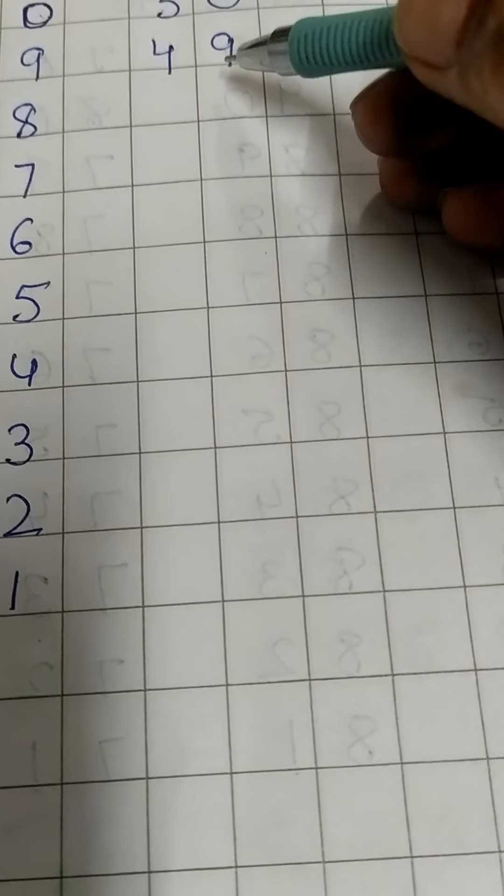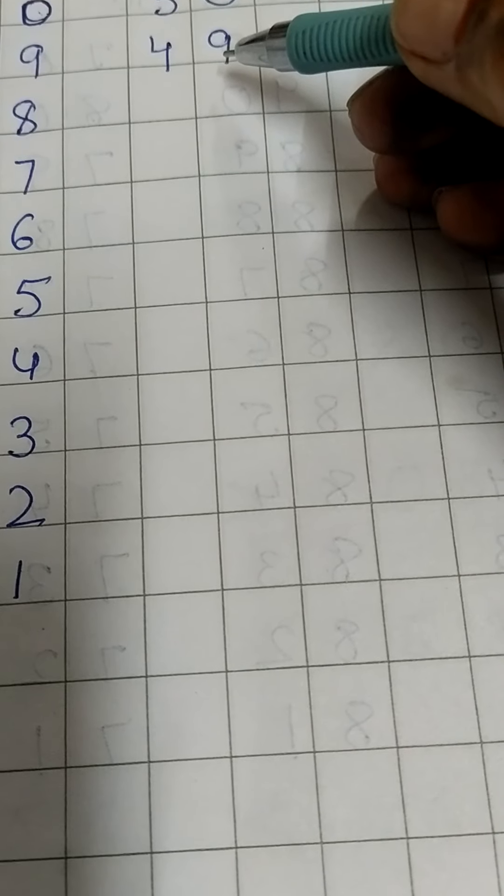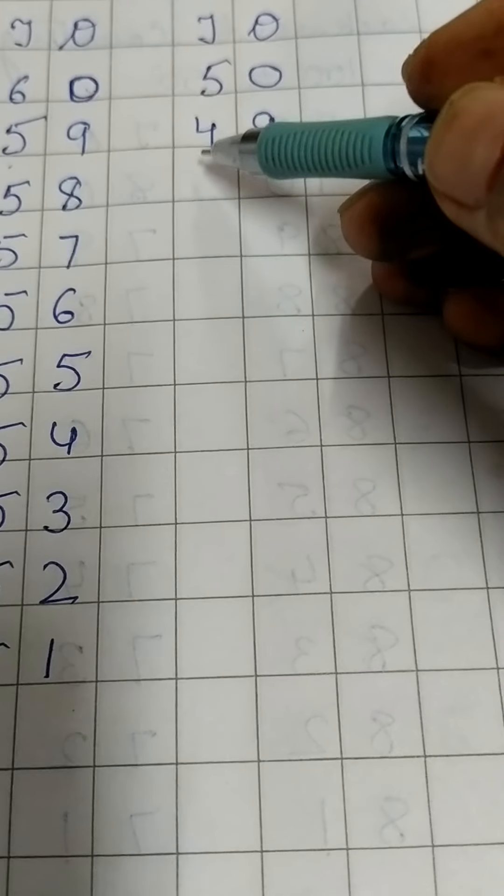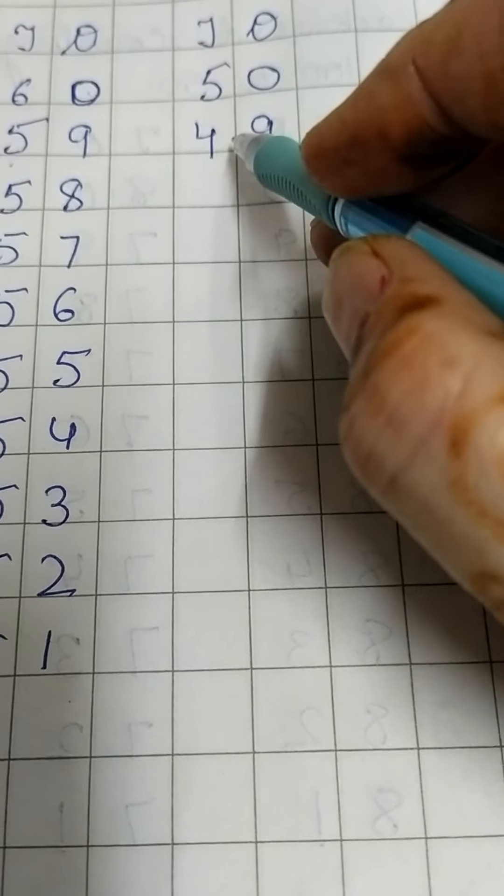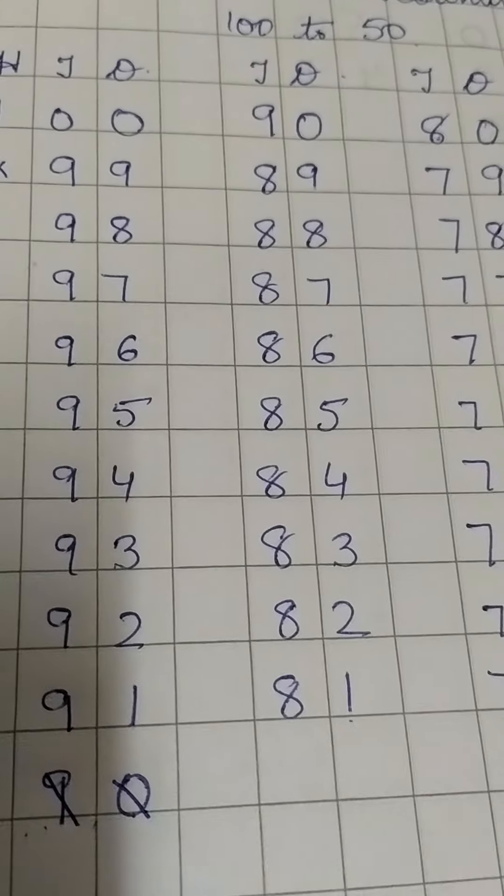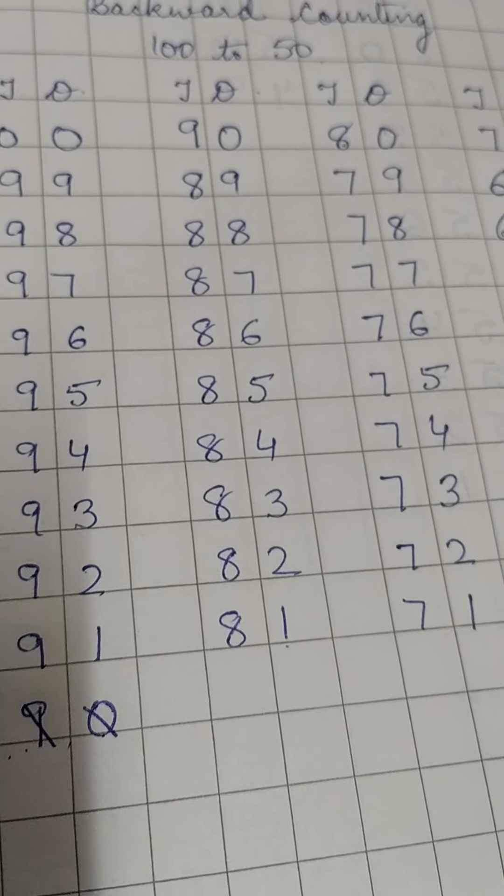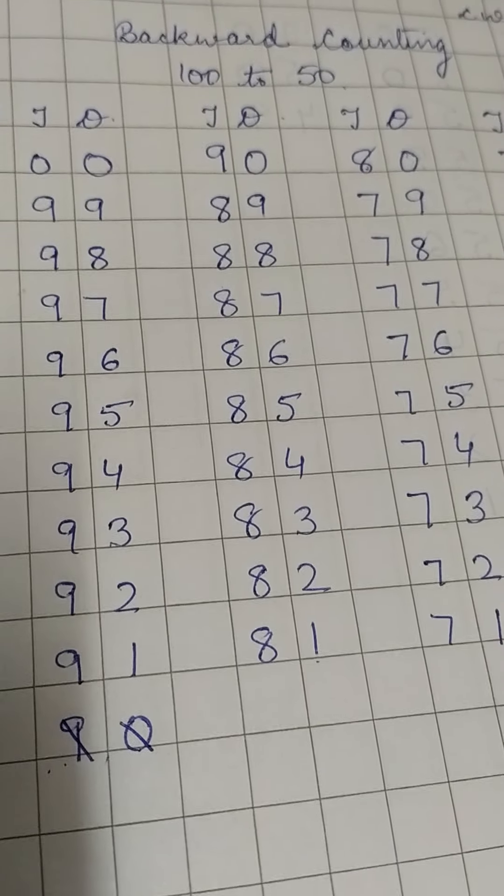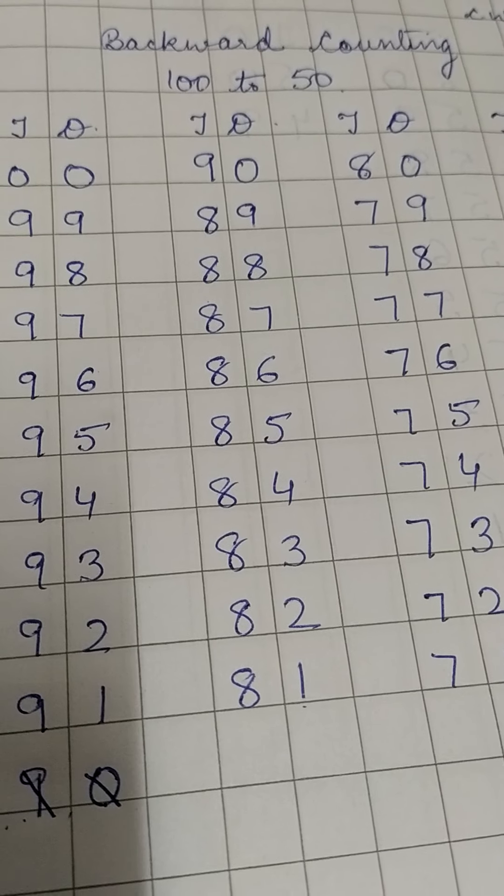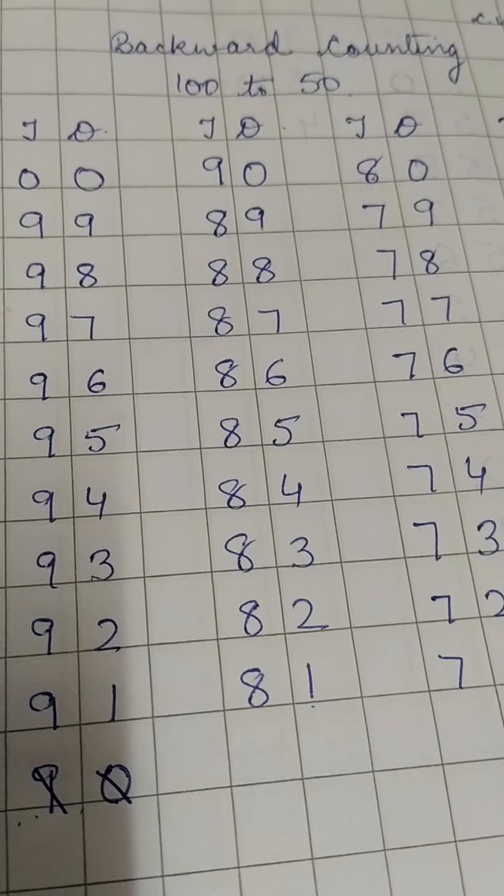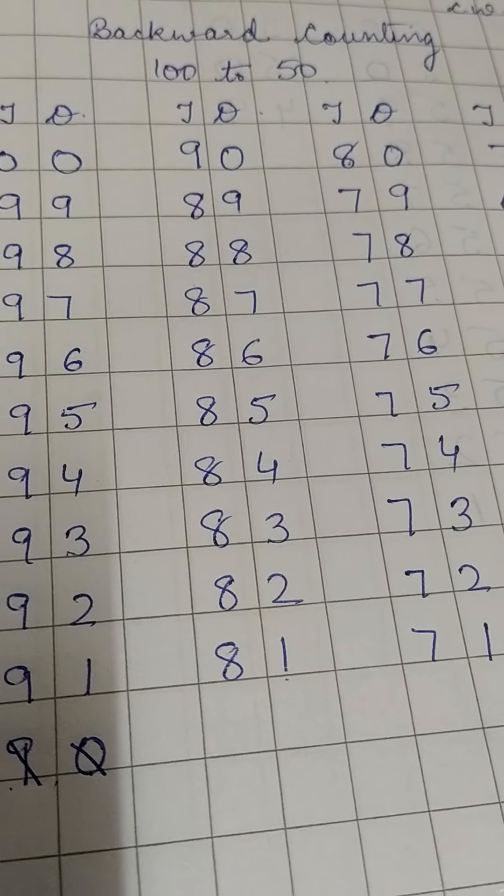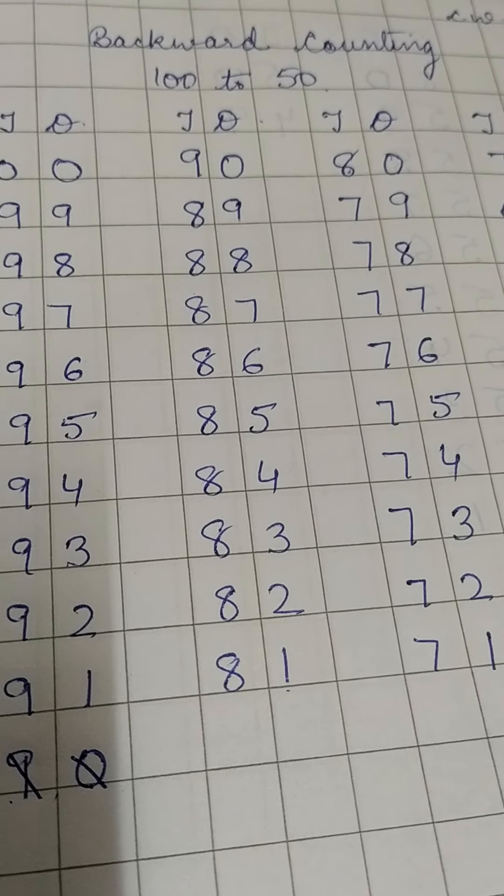Whenever there is 0 the number that comes before will have 9 in the 1s place and 1 will be subtracted from the 10s place number. So practice this at home. It is not difficult at all. Try it. Try backward counting. Do keep on watching the videos and also subscribe so that whatever I do, whichever video I make, you get it directly. Thank you for watching this video. Have a nice day.